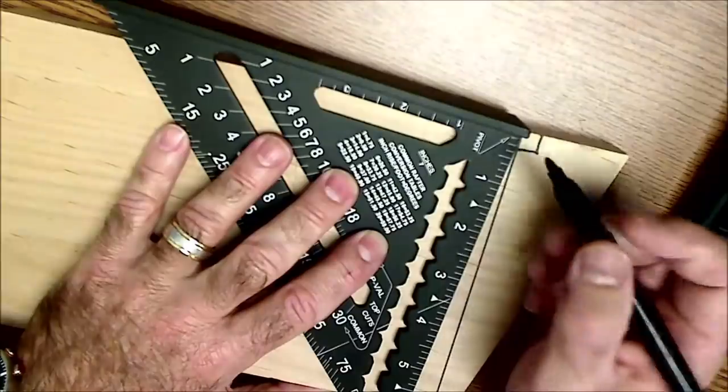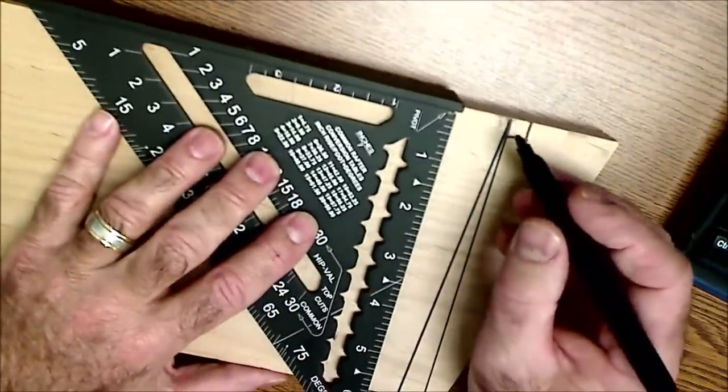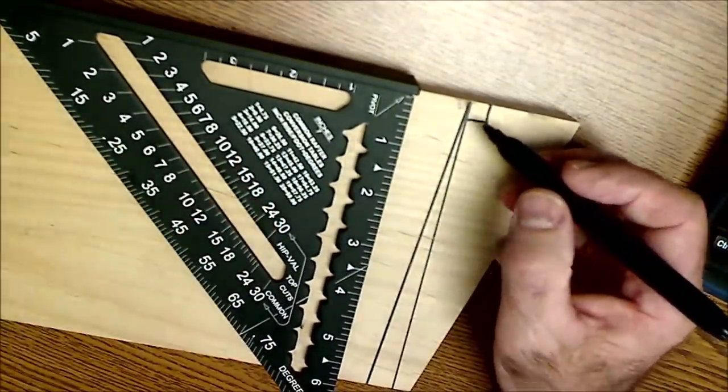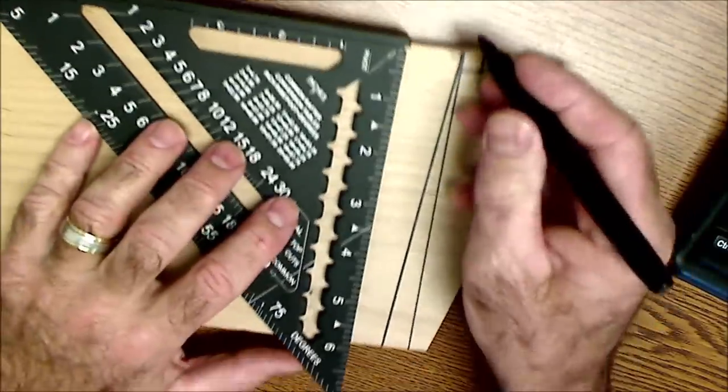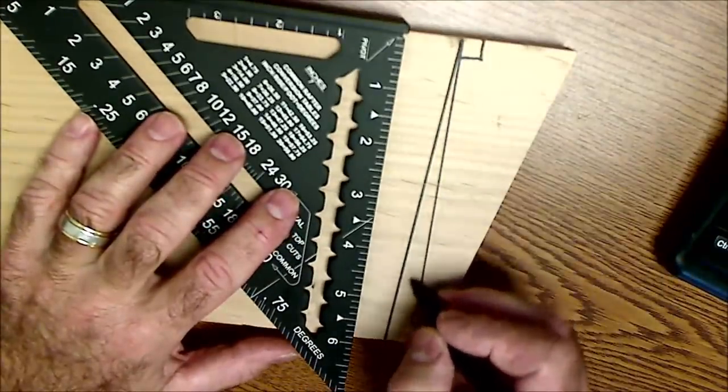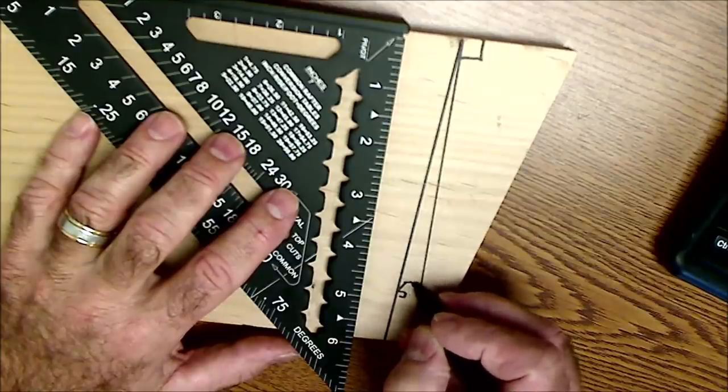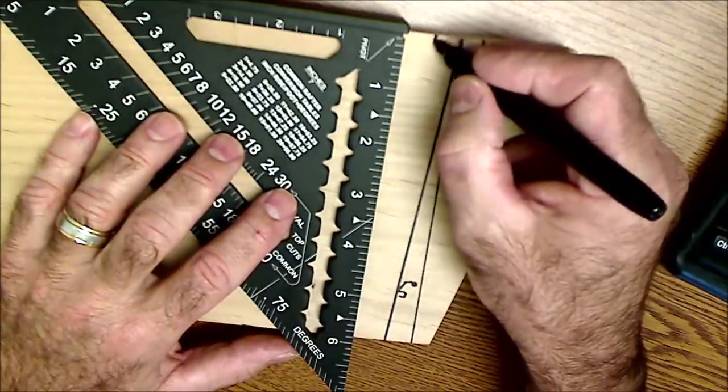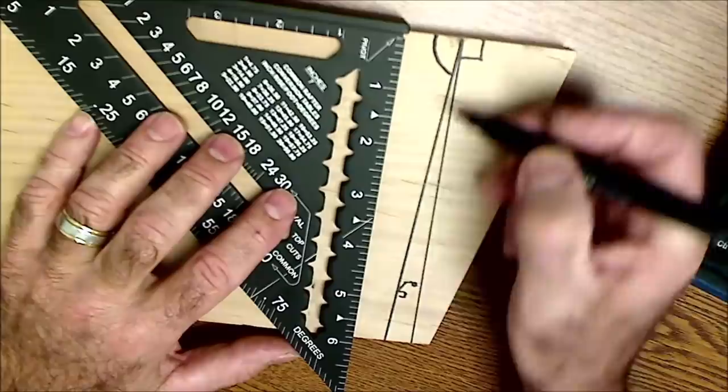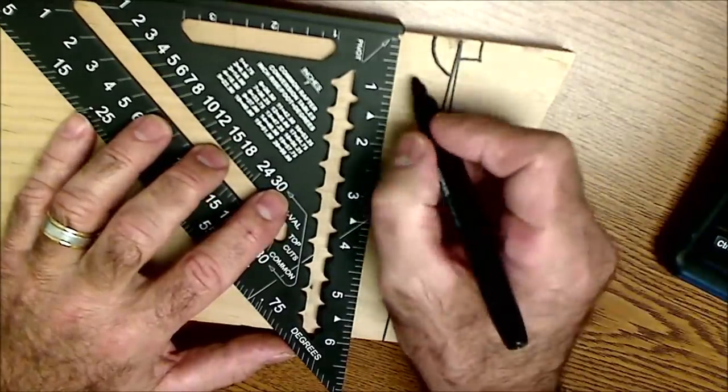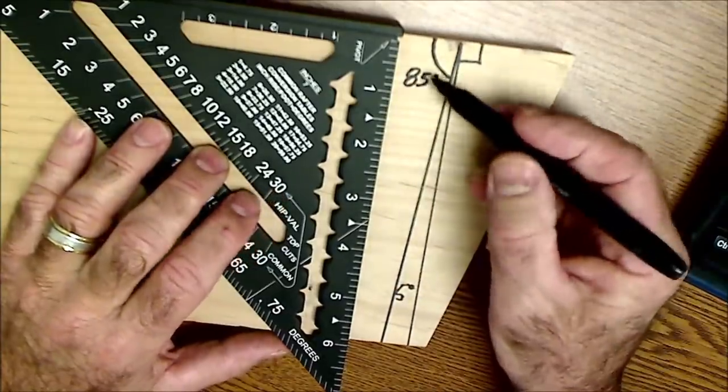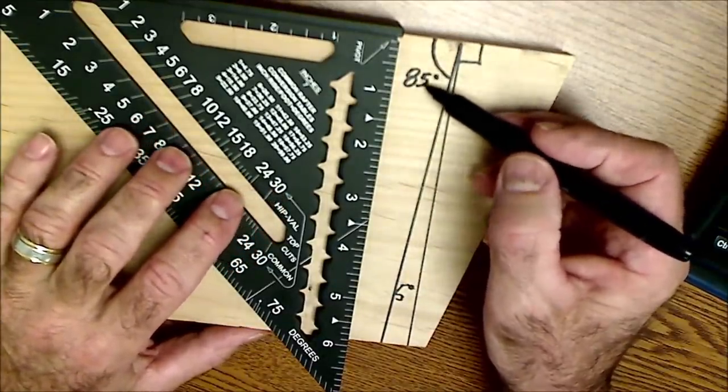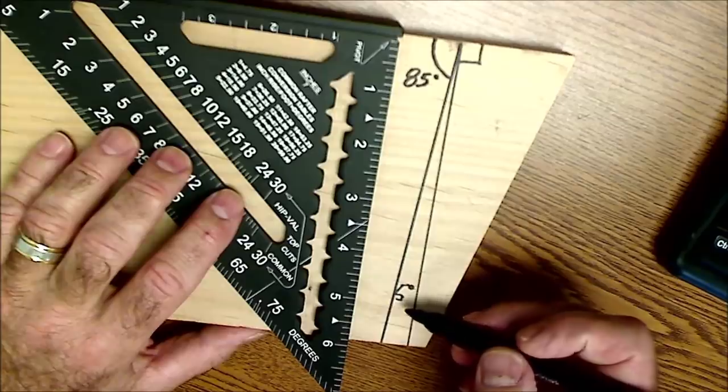And then kind of the key on understanding this is knowing a little bit of math and geometry. So this is a 90 degree angle. I pivoted five off. This little angle here is five degrees. So this angle from the edge of my board to here I need to know is 90 minus five or 85 degrees. So two angles that add up to 90 are called complementary, and this is a complement of that five degree angle.